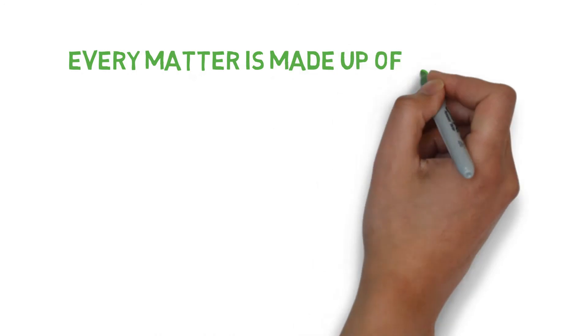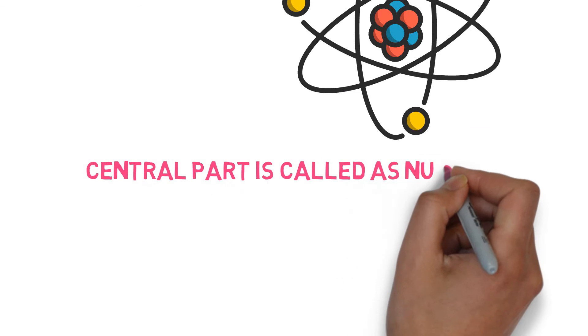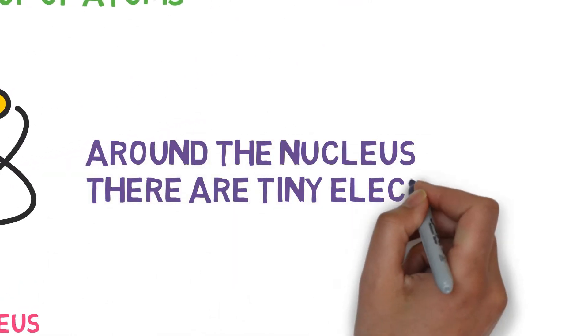Every matter is made up of atoms. The atoms have a central nucleus which is comprised of protons and neutrons, and revolving around the nucleus we have the electrons.